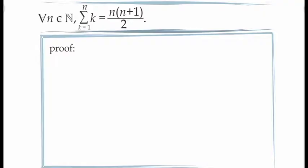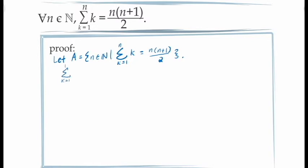Let's prove that this formula holds for all values of n in the natural numbers. We consider the set of those natural numbers for which our formula does hold, and we need to prove that this set contains the number 1 and is an inductive set. Considering the case where n equals 1, we see the sum from 1 to 1 of the sequence f of k equals k is defined to be just the first term, which is 1. Multiplying by 2 on the top and bottom, we get 1 times 1 plus 1 divided by 2, which is n times n plus 1 divided by 2 when n equals 1. This proves that 1 is an element in the set A.